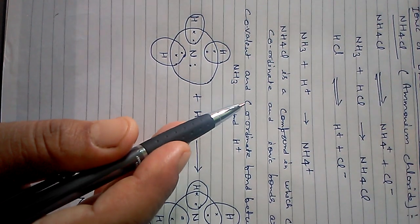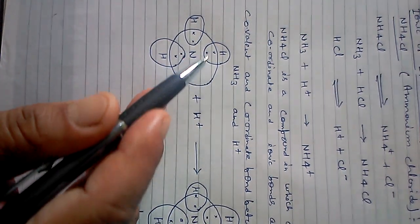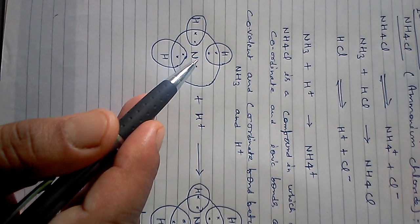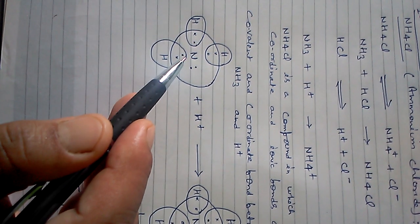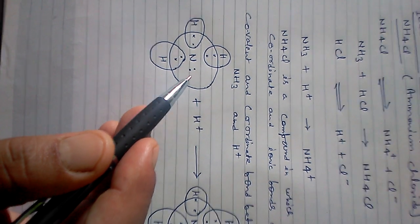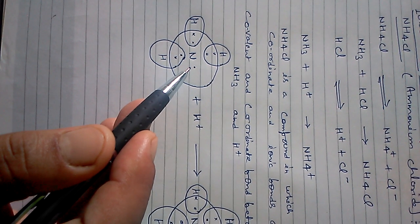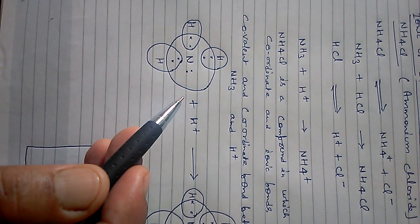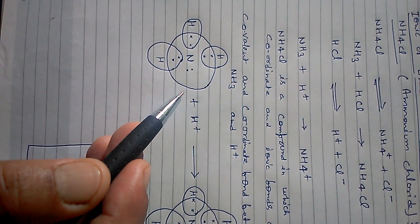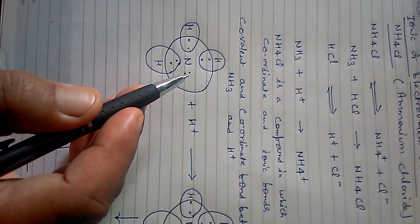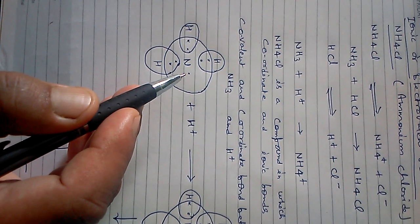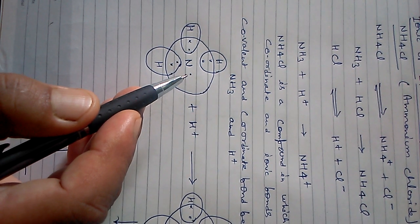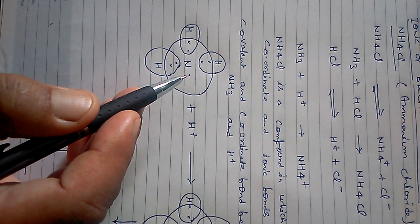Covalent bonds are found between the three hydrogens and one nitrogen. Coordinate bond is found between the fourth hydrogen and nitrogen. To understand the formation of covalent and coordinate bonds, note that the number of valence electrons in nitrogen is five.